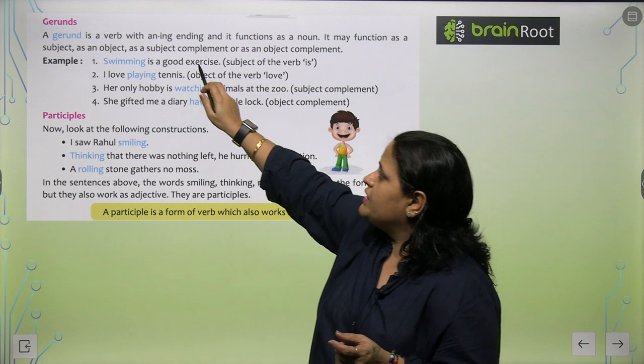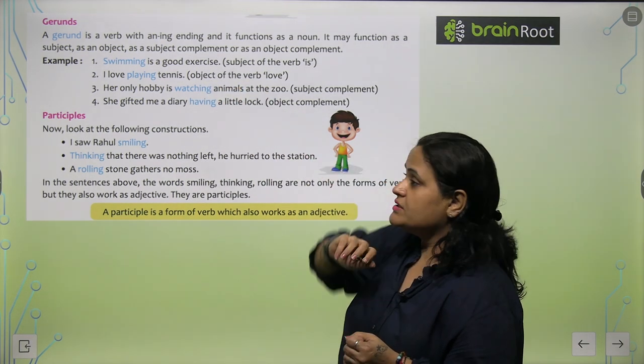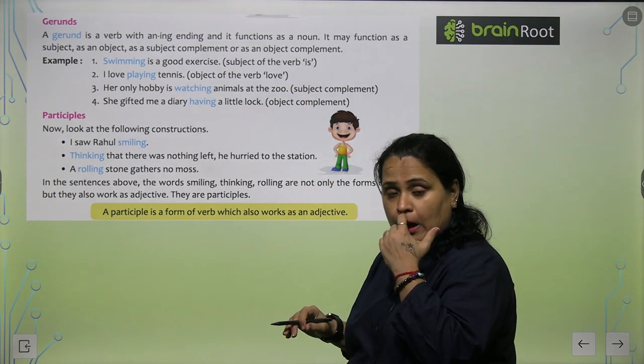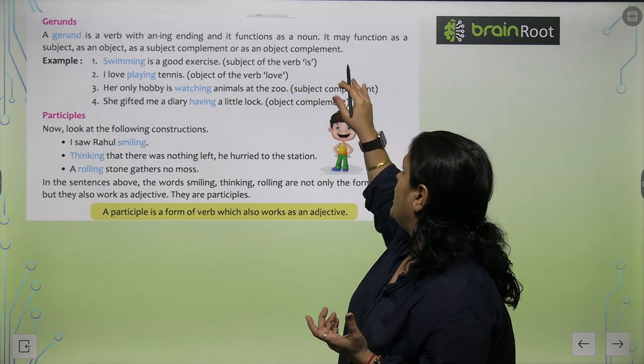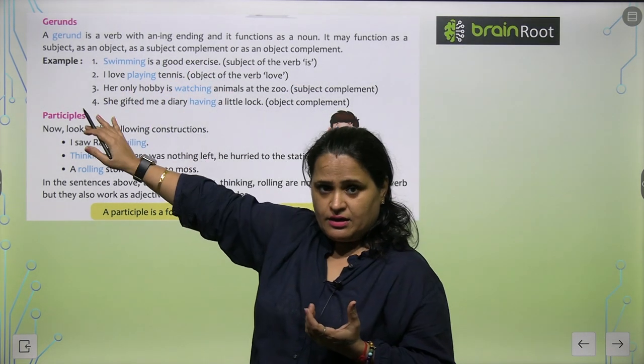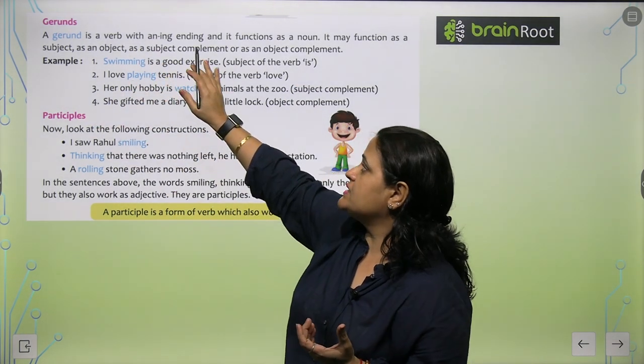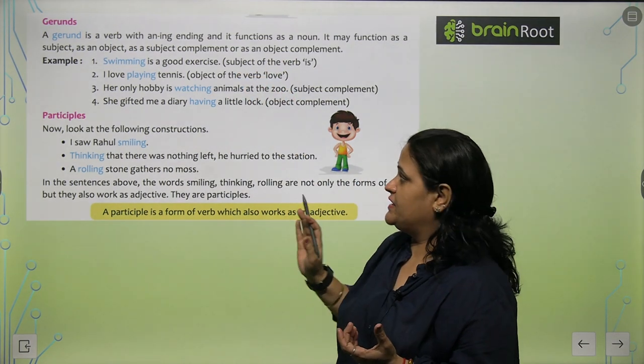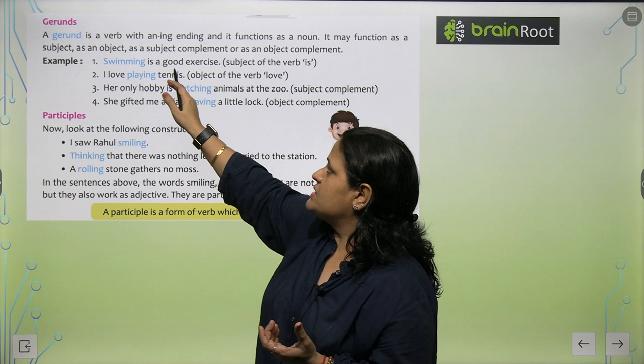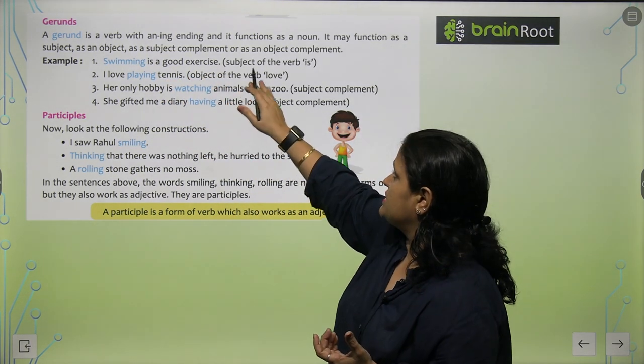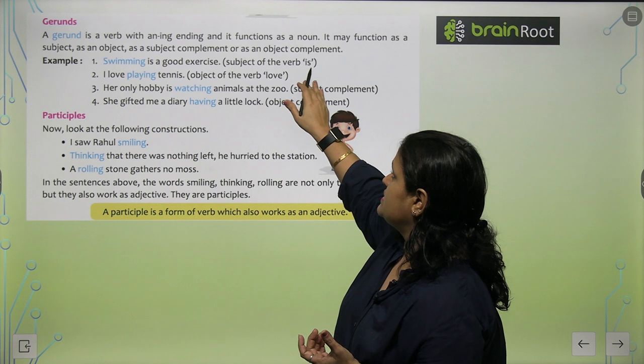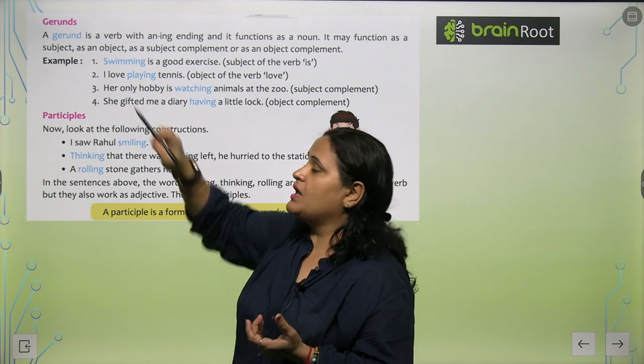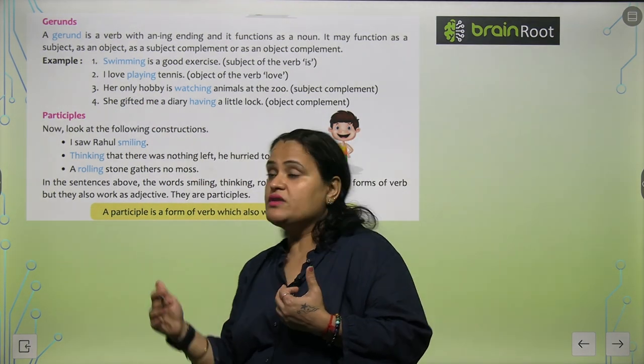Gerunds. A gerund is a verb with an -ing ending and it functions as a noun. It may function as a subject, as an object, as a subject complement or as an object complement. For example, swimming is a good exercise. So swimming here is the subject of the verb 'is'.